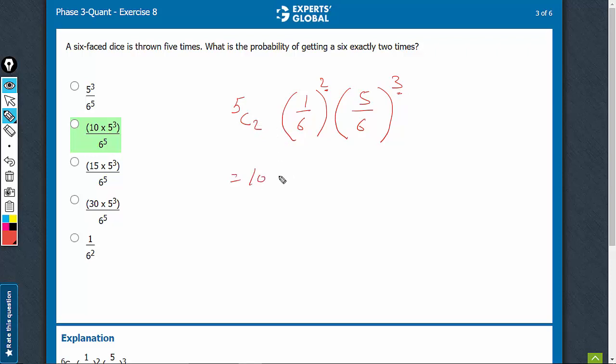Let's simplify. It's 10 into 5 raised to power 3 upon 6 raised to power 5. That's option B.